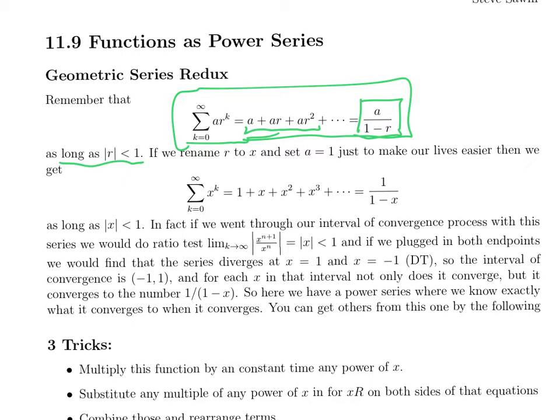To connect that to power series, I just want to call r x. And for now let's set a equal to 1 to make our lives easier. Then that formula becomes the power series sum of x to the k, k equals 0 to infinity. So that's just the series 1 plus x plus x squared plus x cubed. That is equal to 1 over 1 minus x, as long as the absolute value of x is less than 1.